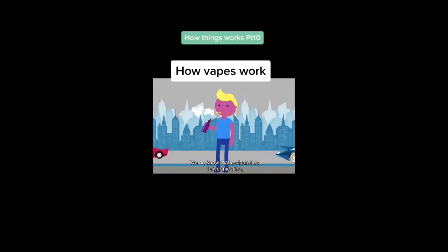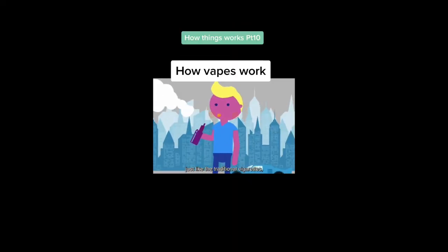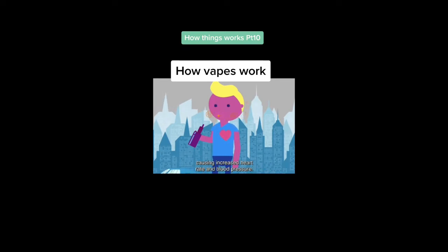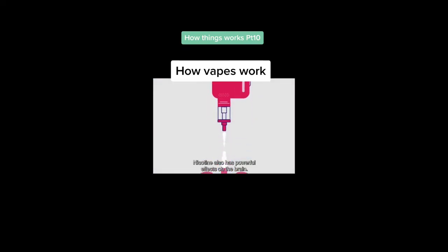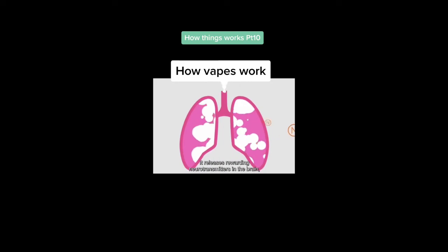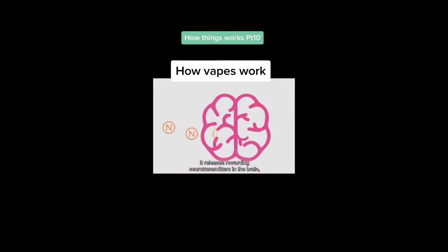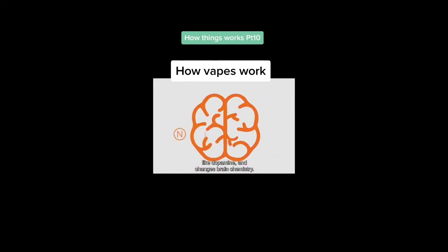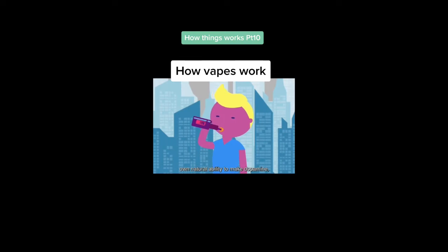We do know that e-cigarettes deliver nicotine, just like traditional cigarettes, causing increased heart rate and blood pressure. Nicotine also has powerful effects on the brain. It releases rewarding neurotransmitters in the brain, like dopamine, and changes brain chemistry. It is a stimulant, making people feel more alert, but when it goes away, people crave it even more. It can interfere with the body's own natural ability to make dopamine, and soon the user needs nicotine just to feel normal.